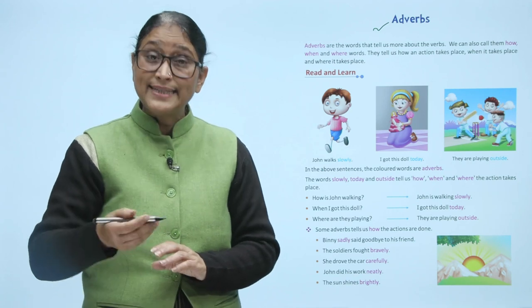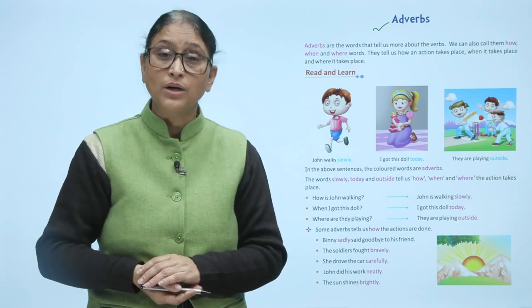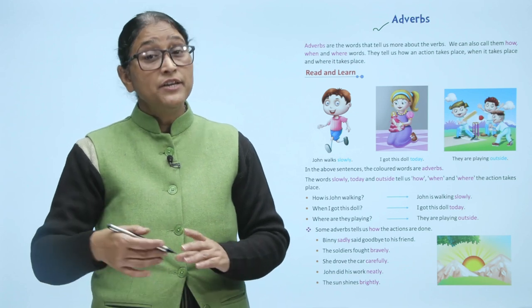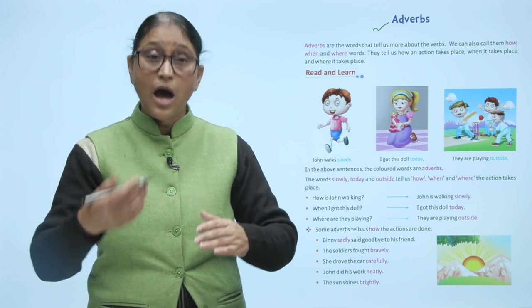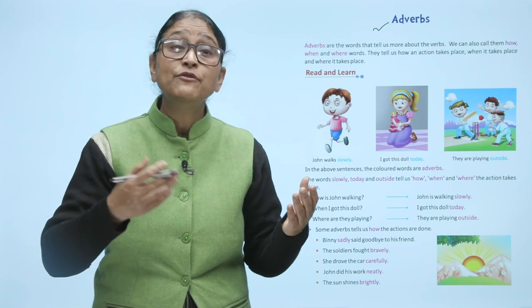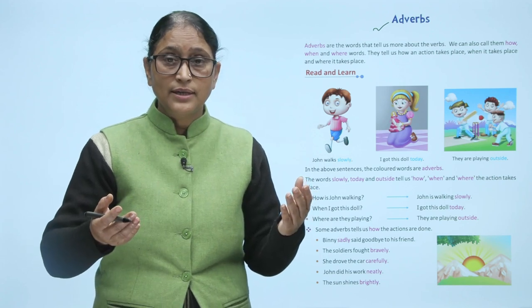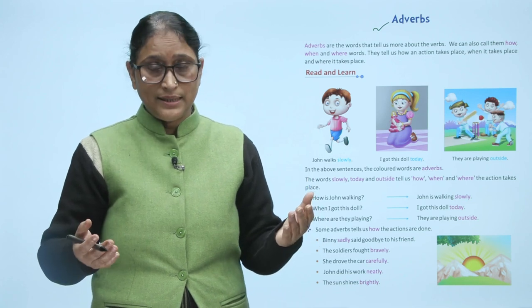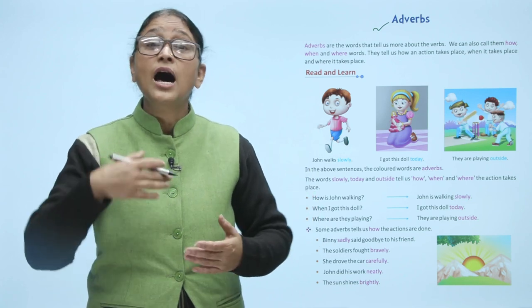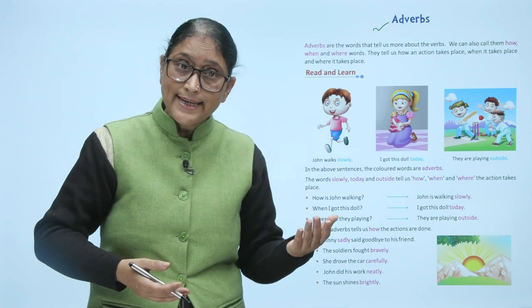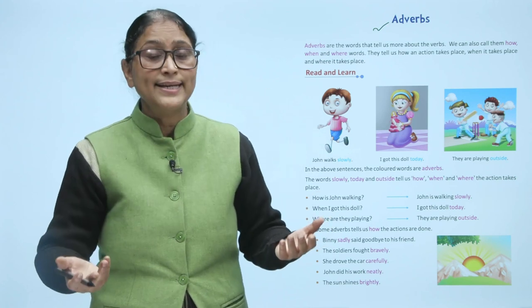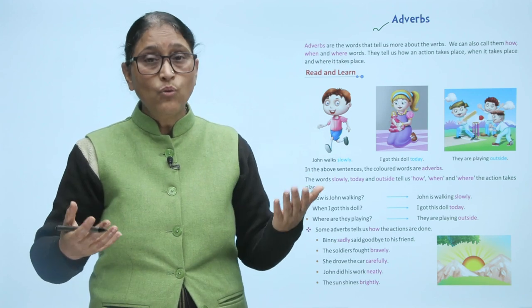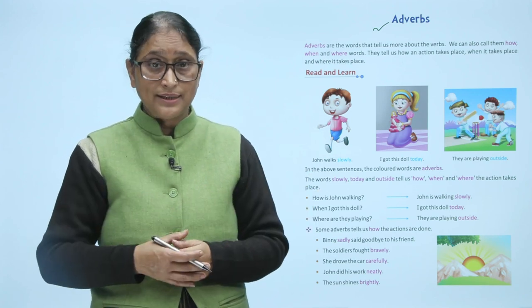Adverbs are the words that tell us more about the verbs. Adverbs kis ke baare mein batate hai? We can also call them how, when and where words. They tell us how an action takes place, when it takes place and where it takes place. Jo action hai, wo kaha hua, kaise hua, kab hua — in ko hum use kar sakte hai.